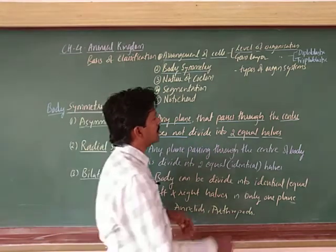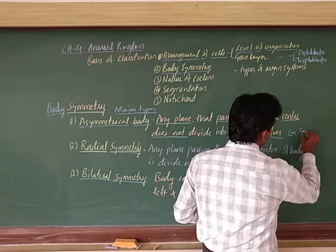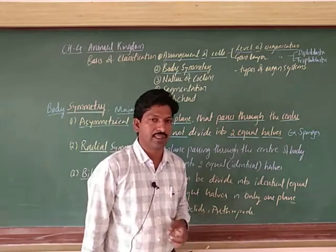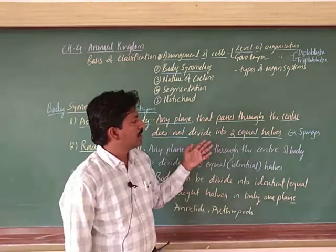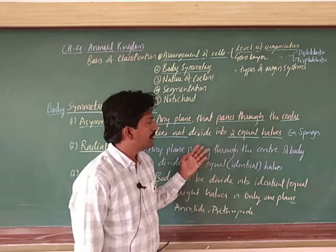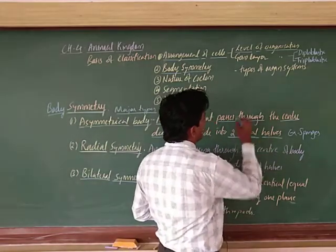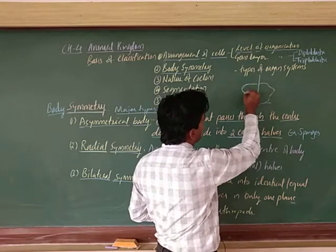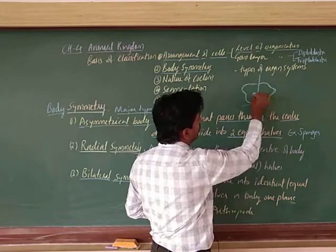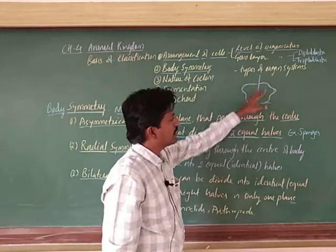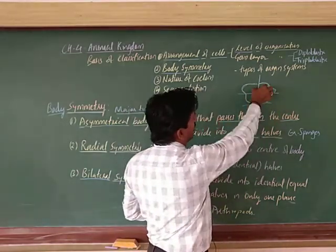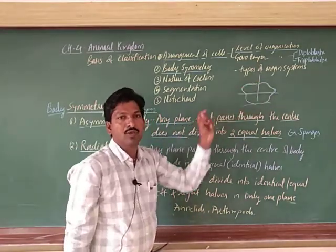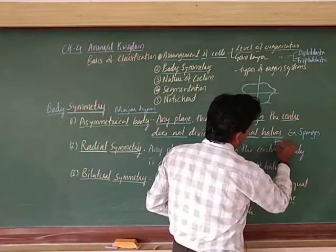For example, sponges - porifera - are examples of asymmetry. You can take the bathing sponge as an example. When you take the section, the two halves are not equal in any plane. Sponges are the first phylum of invertebrates. So they are not divided into two equal halves - the identical parts are not formed.